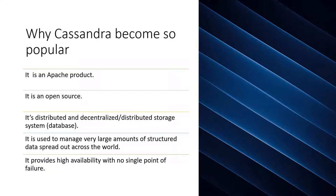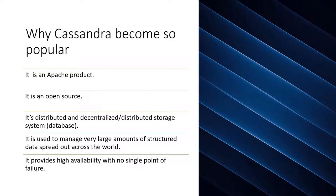Cassandra has a proven path — it was first implemented in Facebook inbox search, then taken by the Apache organization and now it's an Apache product. It's open source, distributed, and decentralized with a distributed storage database system. It can handle an enormous amount of incoming data from several sources. One of the biggest things about Cassandra is there is no single point of failure — it is a multi-node environment with high availability.